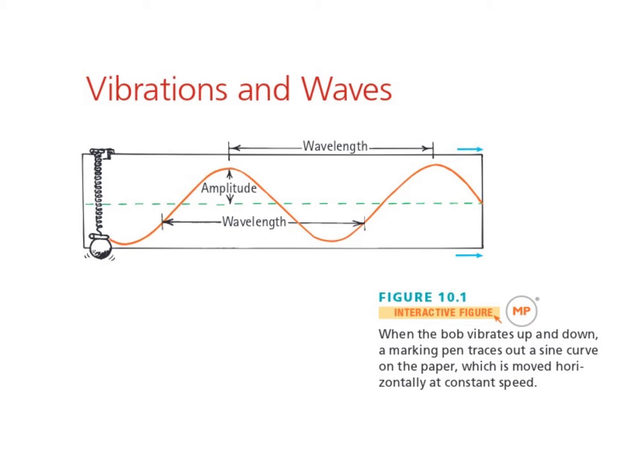As this marker attached to this mass oscillates and vibrates up and down, the paper is dragged underneath it, and the pen is going to trace a wave. The wave that we see on the paper is directly tied to the vibration of this spring going up and down. When you speak, there are two cords in your throat called your vocal cords, and they vibrate — that vibration creates sound, which is a different kind of wave. Vibrating things are what are necessary to create waves.